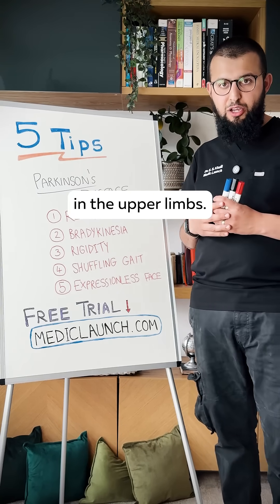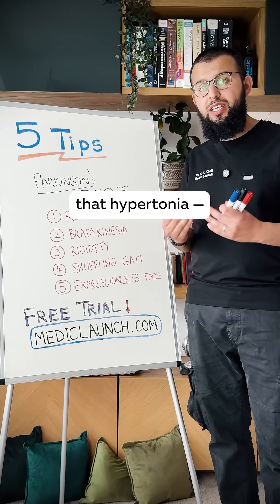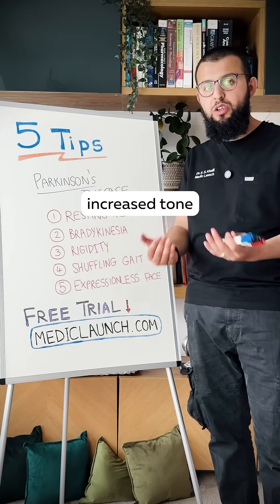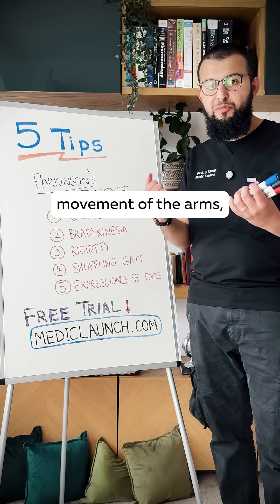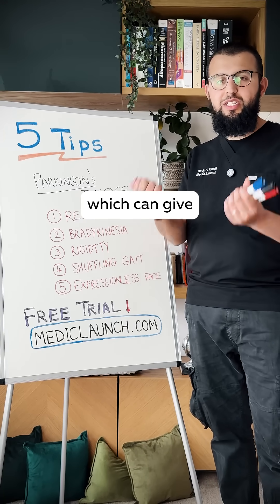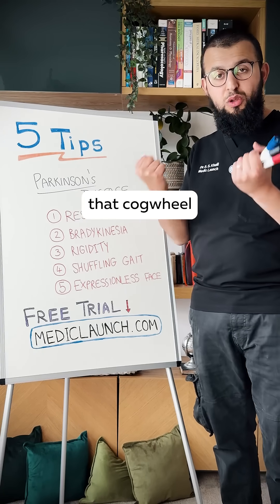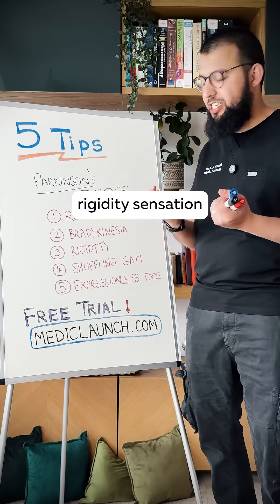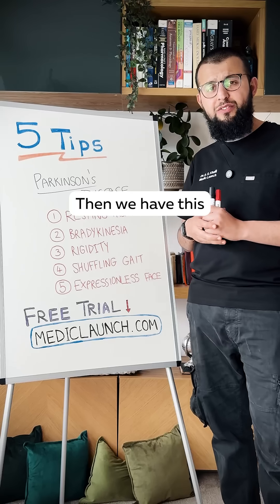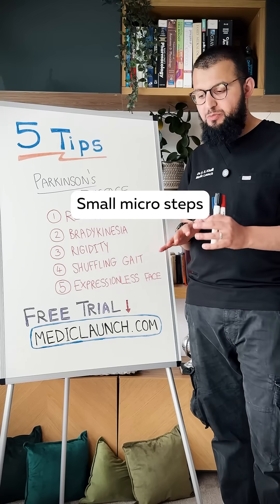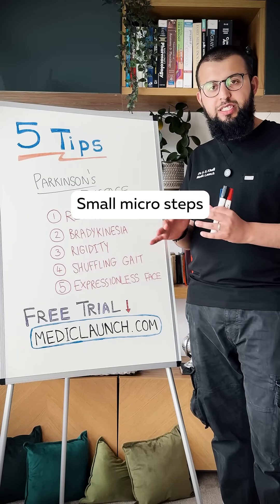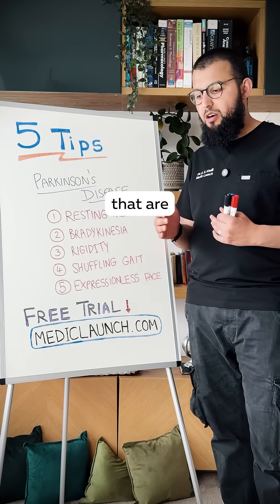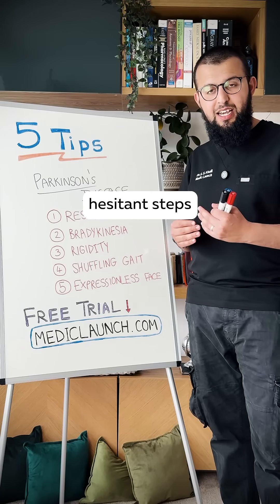The third is rigidity. This is often elicited during clinical examinations in your OSCEs and is easy to find in the upper limbs. It's that hypertonia — the increased tone on passive movement of the arms — which can give that cogwheel rigidity sensation.